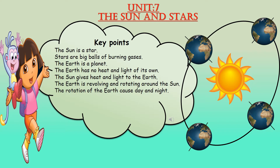All eight planets, including our Earth, are moving around the Sun. This system — with the Sun at the center and all eight planets revolving around it — is called the solar system. Our Earth and all the other planets have no heat and light of their own; our planet Earth gets heat and light from the Sun.